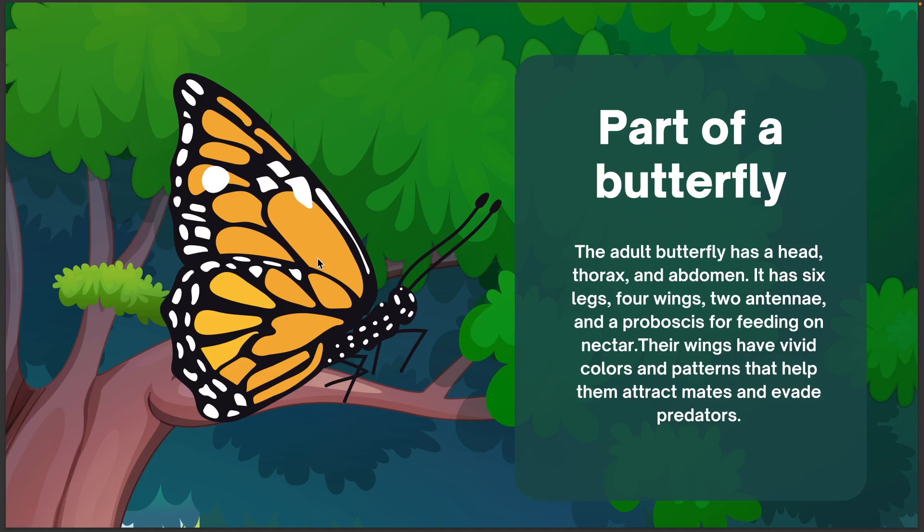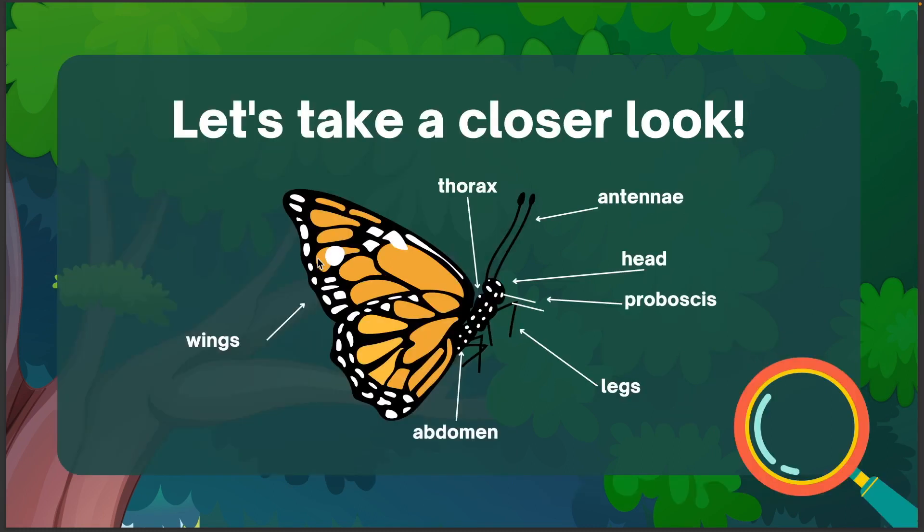Their wings have vivid colors and patterns that help them attract mates and avoid predators. Let's take a closer look. Parts of a butterfly include the thorax, antennae, head, proboscis, legs, abdomen, and wings.